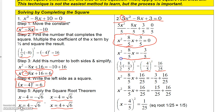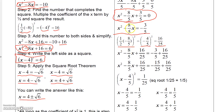Now I figure out what I need to add to both sides — and we've already worked through this: I need to add 16 over 25 to both sides. So I take x squared minus 8-fifths x and add 16 over 25 to the left side, and I add 16 over 25 to the negative 3-fifths on the right side.